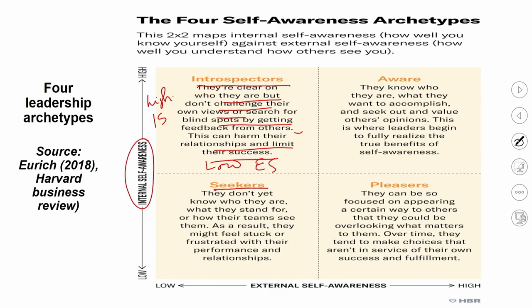Leaders with both low internal and low external self-awareness are called 'seekers.' They don't yet know who they are or what they stand for, and don't know how their teams see them. As a result, they may feel stuck and frustrated with their performance and relationships, because there is no clarity in their own mind and little connection with others.